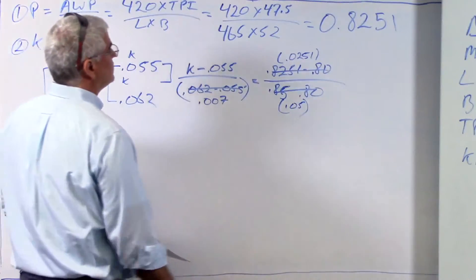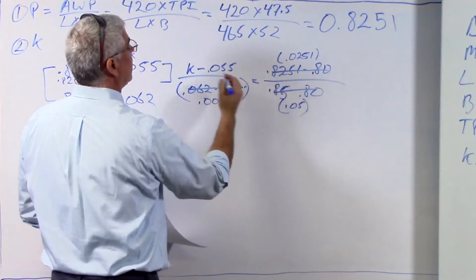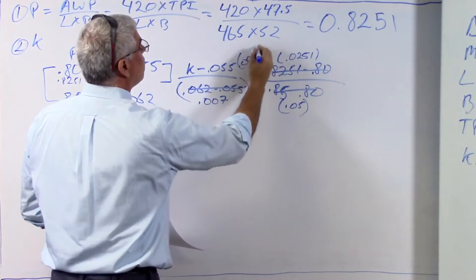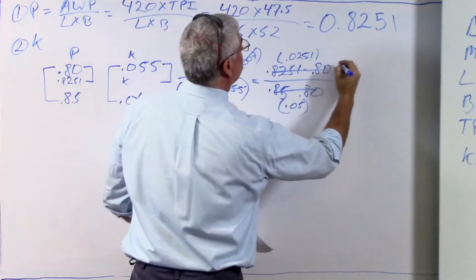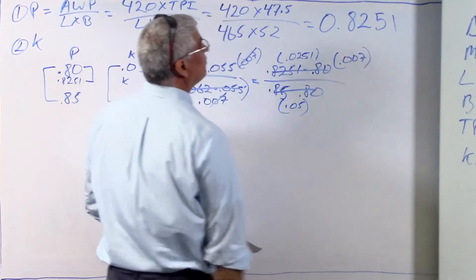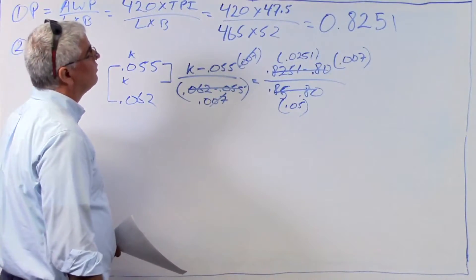So now what I can do is I've got to get rid of this 0.007. I've got to get it over onto that side. So I'm going to multiply both sides by 0.007. Those cancel, and, OK, 0.007, OK, I'm going to multiply that. Now I've got k minus 0.055.